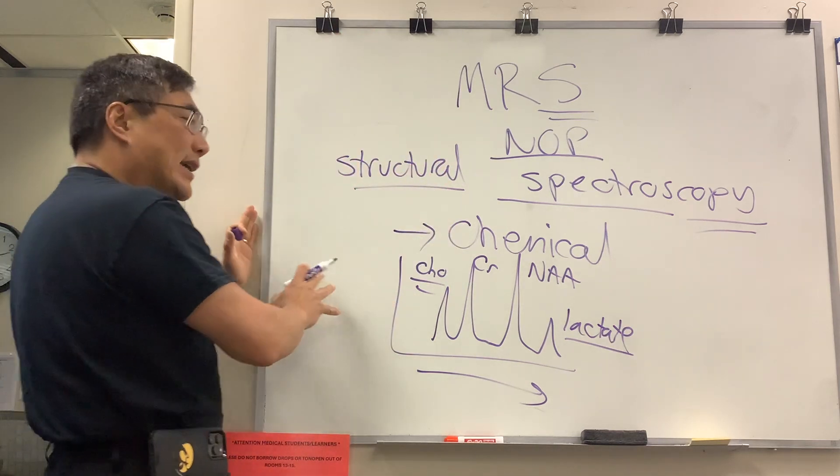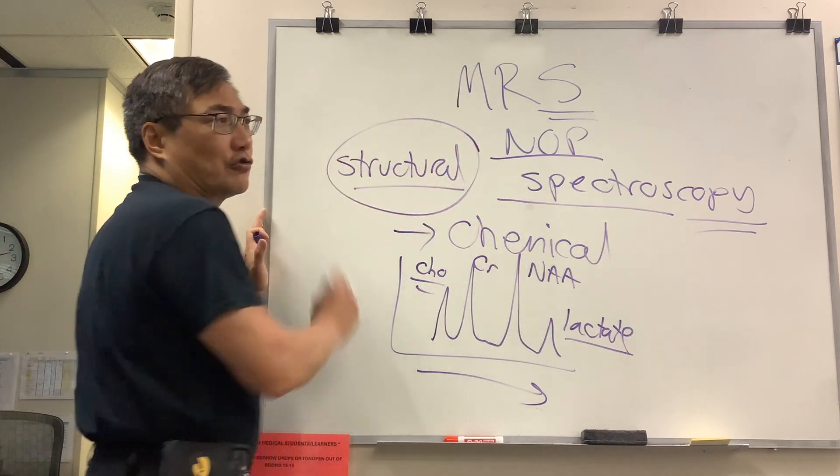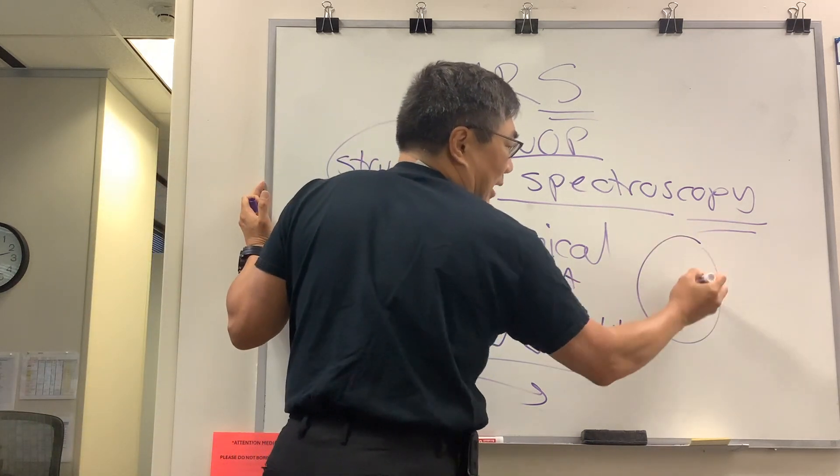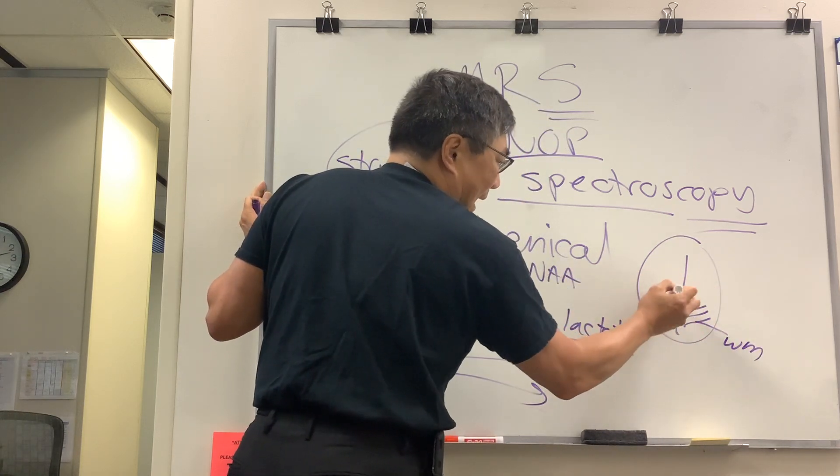In neuro-ophthalmology, the utility of spectroscopy is seeing what is in a pathological lesion seen on the structural imaging study. So on a structural MRI, we might see a white matter lesion, or it might be a mass.